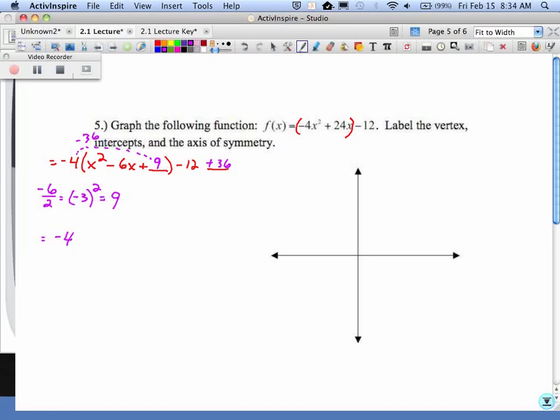What's on the dotted line? Negative 36. So what goes in the final blank? Positive 36. So we have negative 4 out front. We factor out the negative 4, did all that work. We have x minus 3 times x minus 3, so it's x minus 3 squared. Negative 12 plus 36 gives me positive 24.